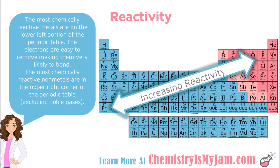Reactivity is another important trend — referring to how easy it is to get an element to react with another element. The most reactive metals are in the lower left of the periodic table. Francium's electrons are extremely easy to remove since it is a large atom with low ionization energy, making it very reactive. The trend is opposite for nonmetals: the most reactive nonmetals are in the upper right corner, with fluorine being the most reactive nonmetal. The noble gases are ignored because they are not reactive at all.